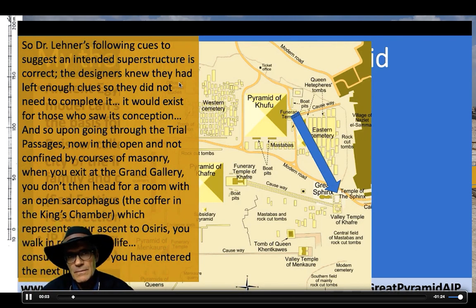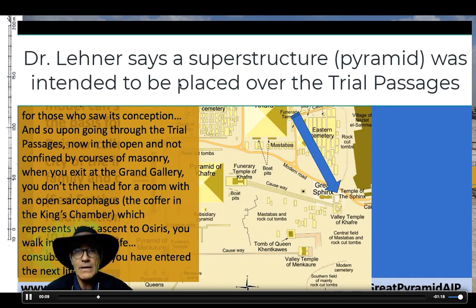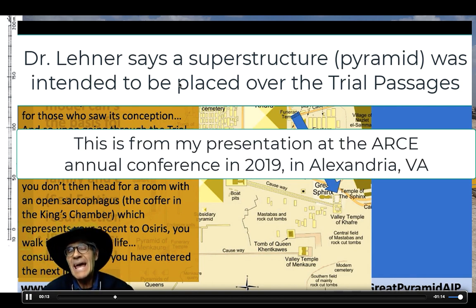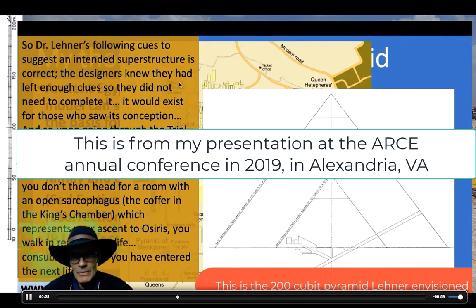Okay, so Dr. Lehner's following cues to suggest an intended superstructure is correct. I think Dr. Lehner was correct in following that line of reasoning. The designers knew they had left enough clues in a sense, so they didn't have to complete the pyramid because we've seen it. Dr. Lehner envisioned it and I do think that the builders intended that. So, they didn't have to build it because now it exists in conception. That pyramid over the trial passages is there sort of representing a special symbolic pyramid of Khufu.